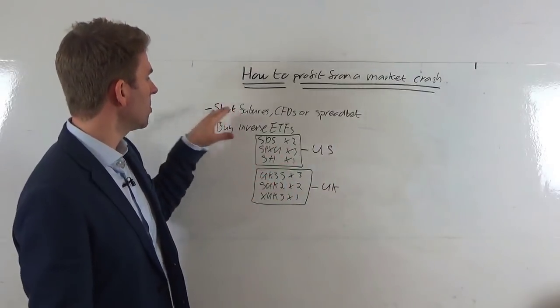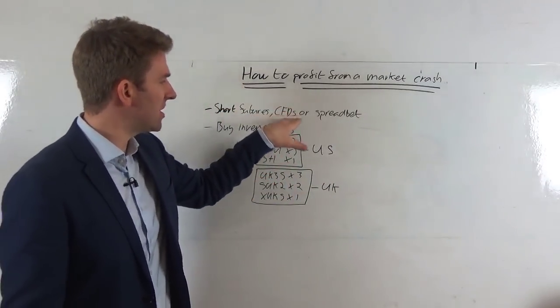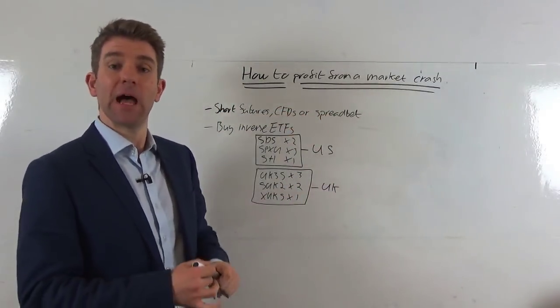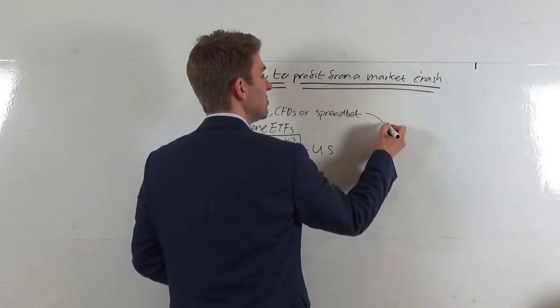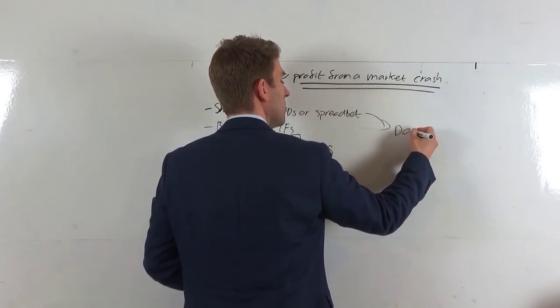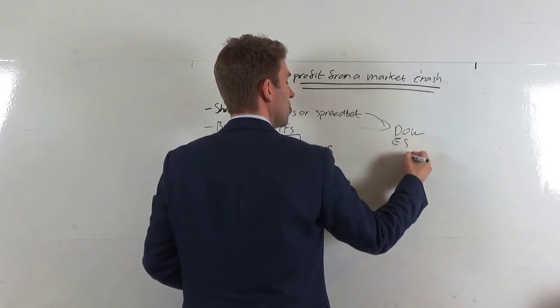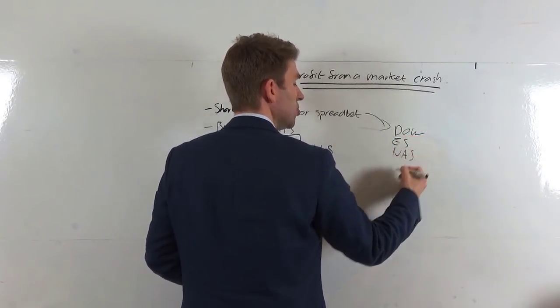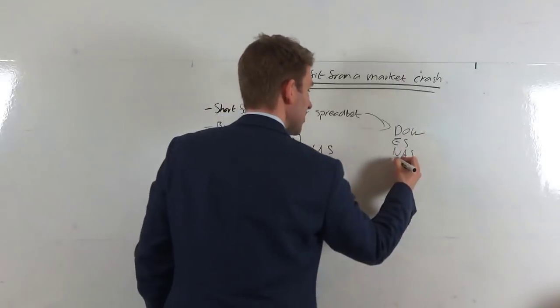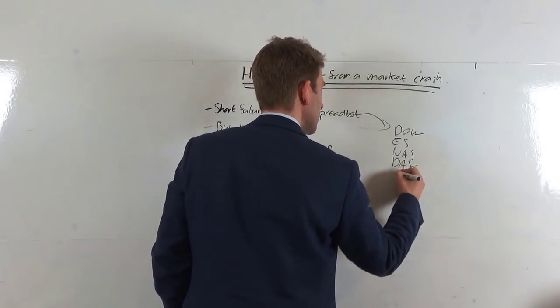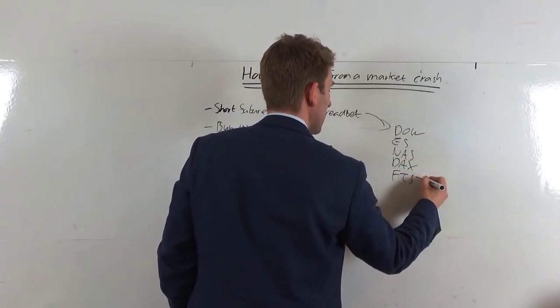Well the obvious first one is to short futures, CFDs or spread bet. Now you could go directly to the horse's mouth so to speak and you could short the Dow, you could short the S&P 500, you can short the NASDAQ, you could go Germany, you could short the DAX, you could go to UK and you could short the FTSE, you could go to the CAC with France.